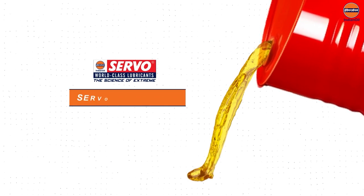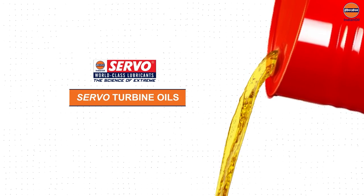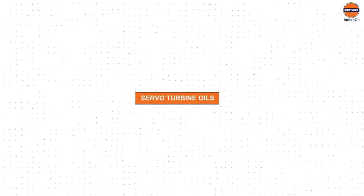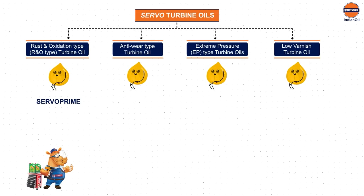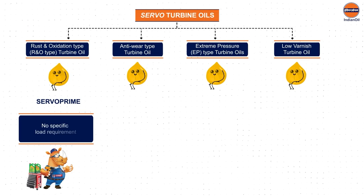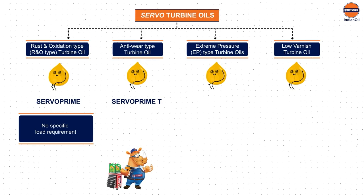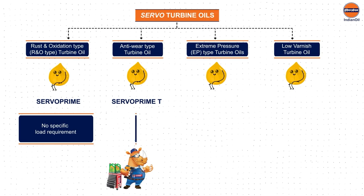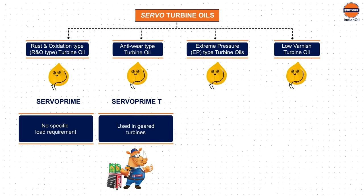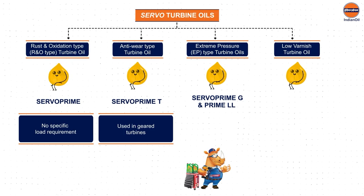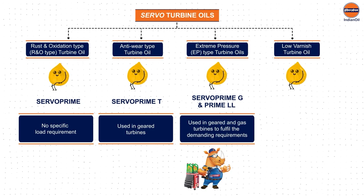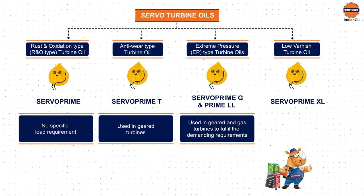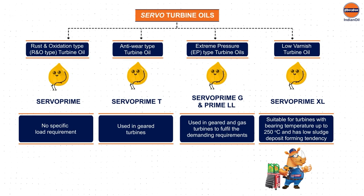Let's look at the turbine oils offered by Indian Oil Servo. Indian Oil Servo offers a range of turbine oils categorized into four segments. Servo Prime is the rust and oxidation type turbine oil without any specific load requirement. Servo Prime T is similar but has anti-wear properties and is used in geared turbines. Servo Prime G and Prime LL are extreme pressure type turbine oils used in geared and gas turbines. Servo Prime XL is the low-varnish turbine oil suitable for bearing temperatures up to 250°C with low sludge deposit forming tendency.